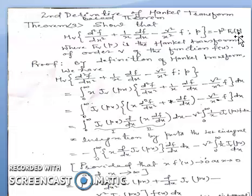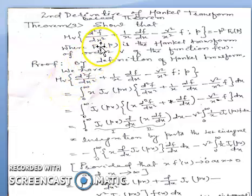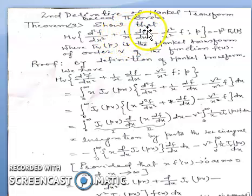How can we prove this result? Again we start as usual from the definition of Hankel transform. By definition of Hankel transform we have Hv of the function, where the function is d²f/dx² + (1/x)df/dx - (v²/x²)f.